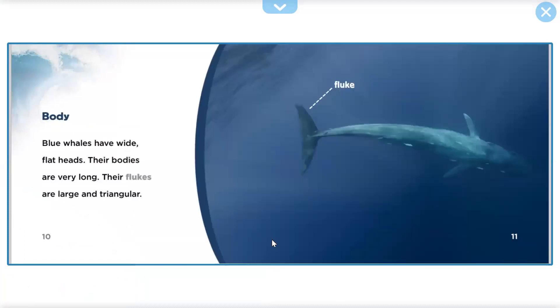Blue Whales have wide and flat heads. Their bodies are very long. Their flukes are larger than a triangular.